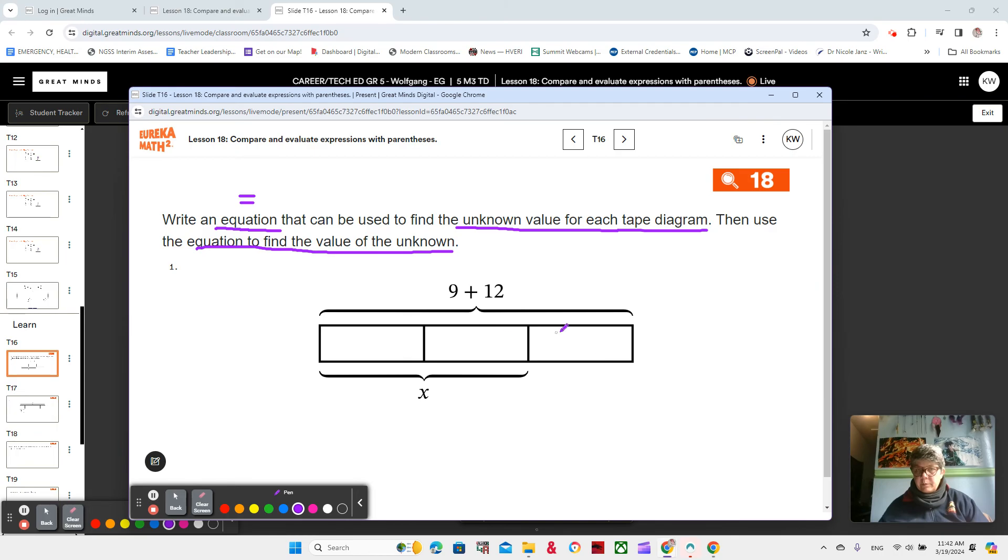So let's check out the tape diagram that we have here for number one. What do we know? What do we know about this tape diagram? Well, we know the answer to 9 plus 12. Do you know what 9 plus 12 is? It is 21. And we see that there's three sections.